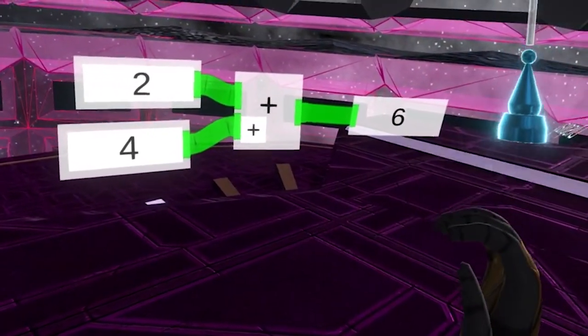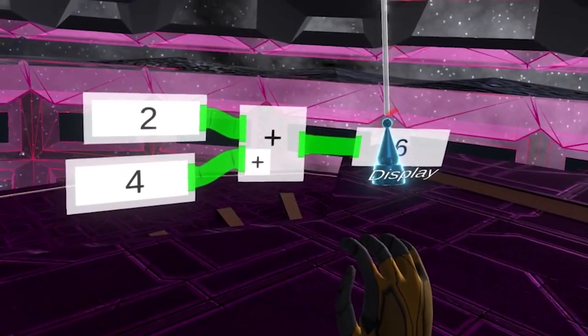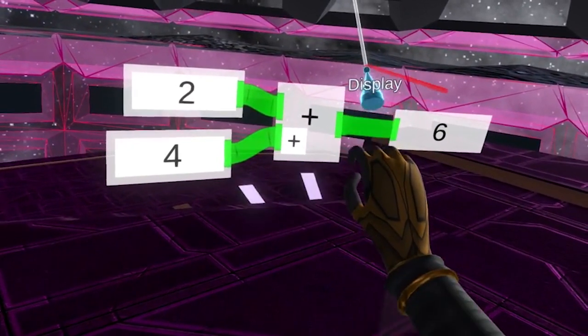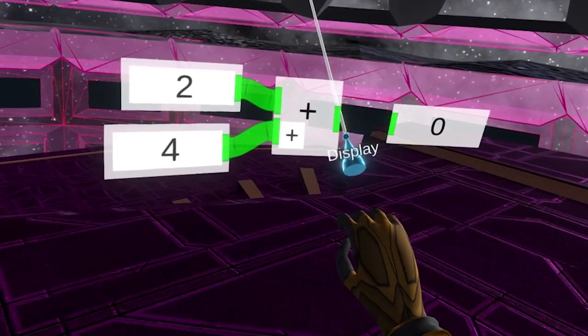Also, you can sever the connection between nodes by pointing your laser upward, holding the trigger, and dragging. Any nodes that intersect with this red line when you release the trigger button will be cut.